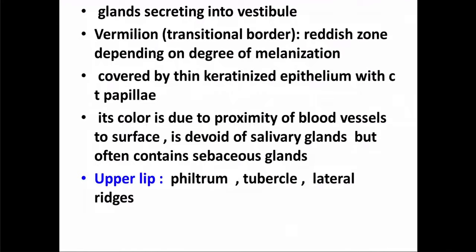Each lip is formed of skin from the outside, mucous membrane from the inside, and the pinkish vermilion border in between. The vermilion border is devoid of salivary glands but usually contains sebaceous glands. Females apply lipstick along the vermilion border, using a variety of colors from red to white to black.